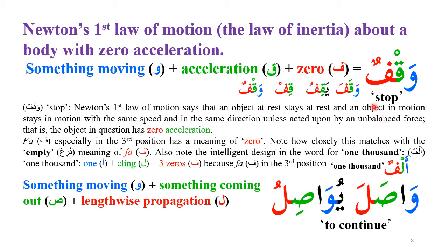You can get Newton's first law from the Arabic word for stop, Waqfun, which is related to inertia. The Waw means something moving — for example, Wasala means to continue, something constantly moving. The Qaf represents acceleration, and the Fa is zero. So Waqfun — stop — means when acceleration is zero, the body is not accelerating; its speed is either constant or it is at a complete stop, depending on your frame of reference.